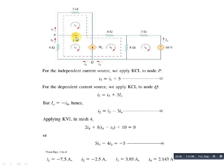For the dependent current source, at node Q the incoming currents are 3Ia and I3, while I2 is the outgoing current. So equation 3 is: I2 = I3 + 3Ia.